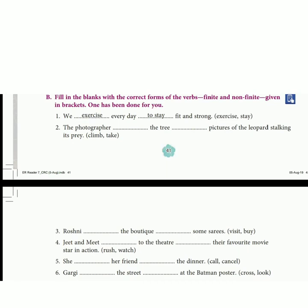Sentence number four: Jeet and Meet [dash] to the theater [dash] their favorite movie star in action. In the bracket we have the verbs rush and watch.